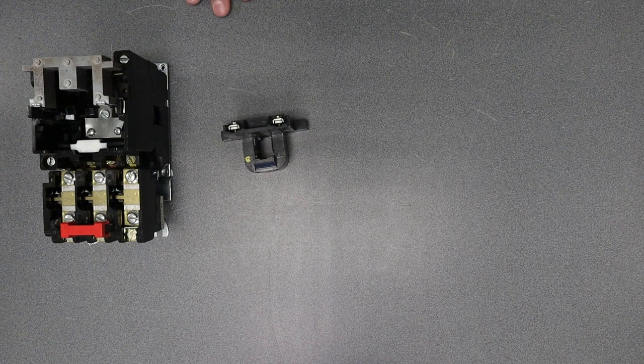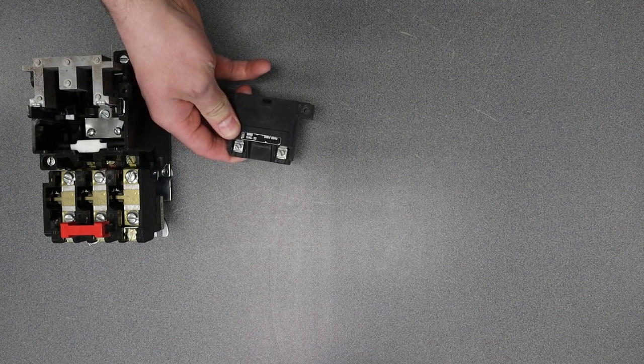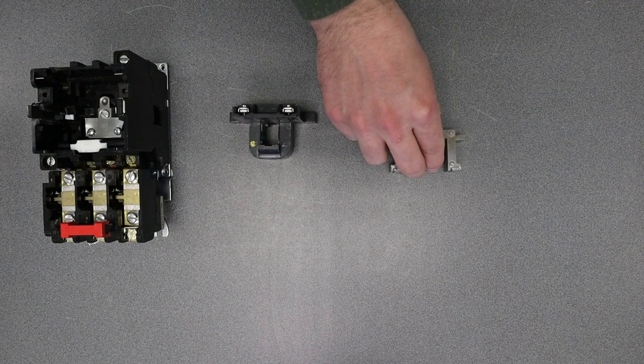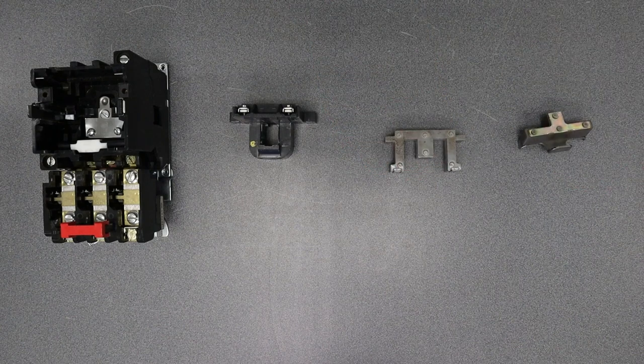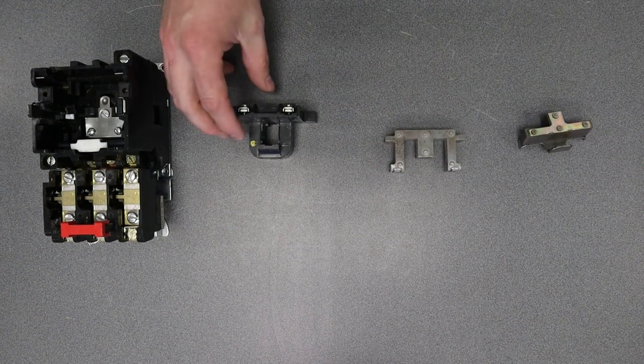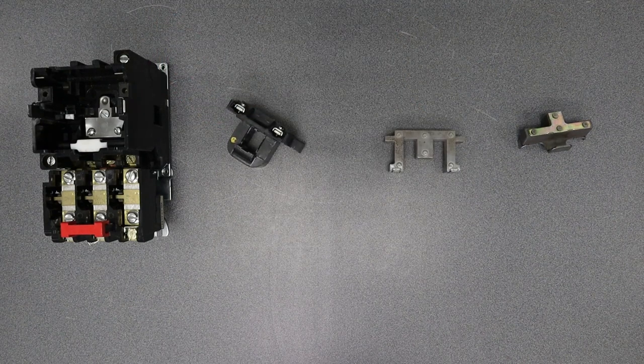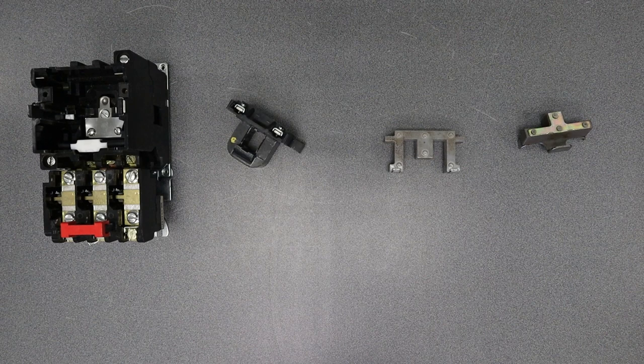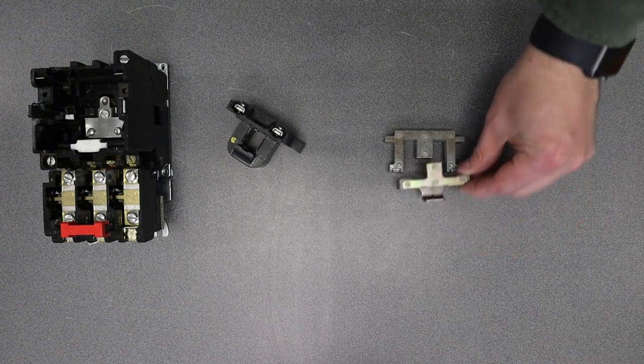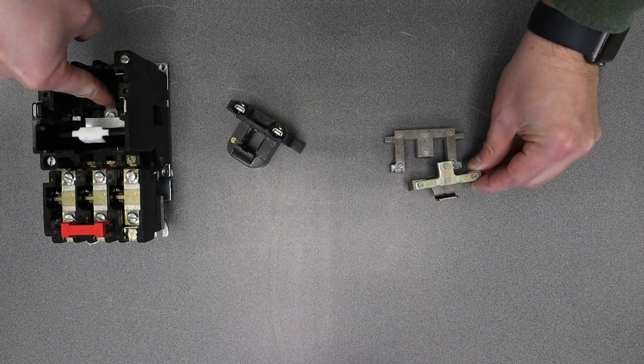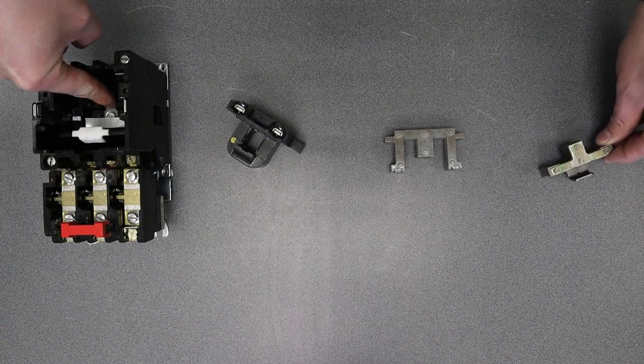I have got my coil. This one happens to be a 208 volt coil. I have got a core and I've got an armature. So we know that the coil wraps around the core. When we energize the coil, it turns into an electromagnet and pulls the armature down, which will change state of all the contacts in that contactor.